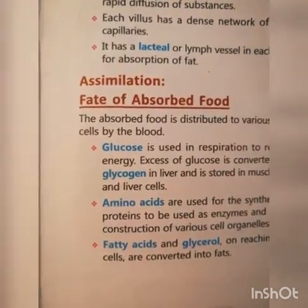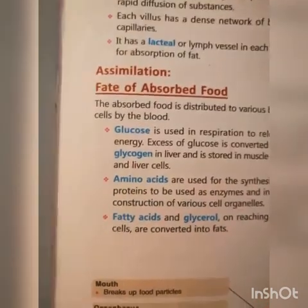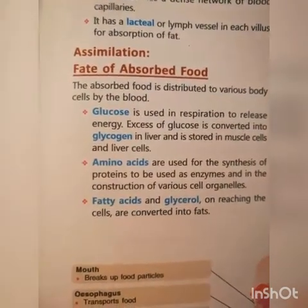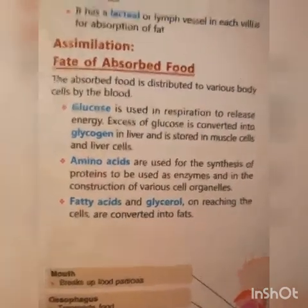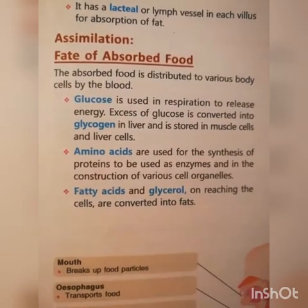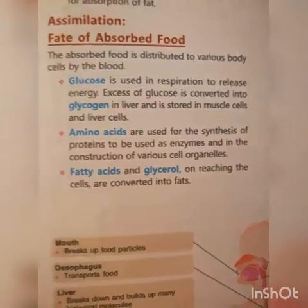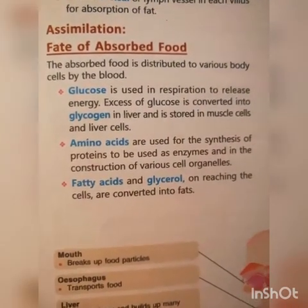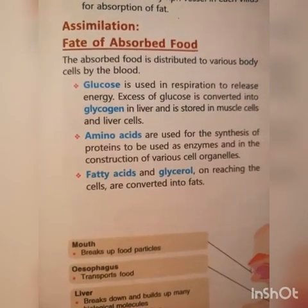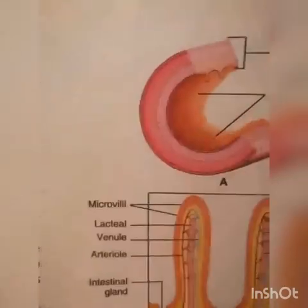Assimilation or transportation: After absorption, there is transportation or assimilation of food particles. The absorbed food is distributed to various body cells by blood. Glucose is used in respiration to release energy. Excess glucose is converted into glycogen in the liver and stored in muscle cells and liver cells. Amino acids are used for synthesis of proteins, to be used as enzymes, and in the construction of various cell organelles. Fatty acids reaching the cells are converted into fat.